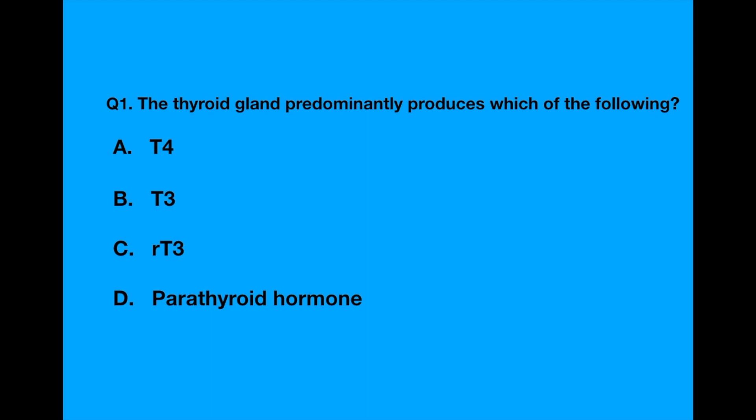Question number one. The thyroid gland predominantly produces which of the following. Option A, T4. Option B, T3. Option C, RT3. Option D, parathyroid hormone.